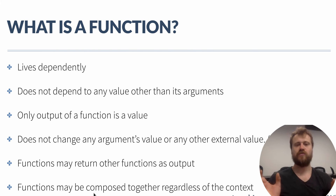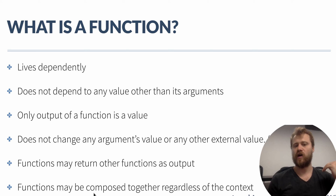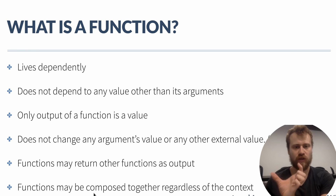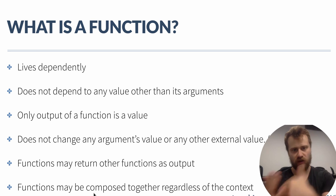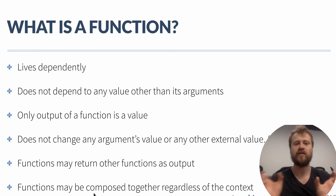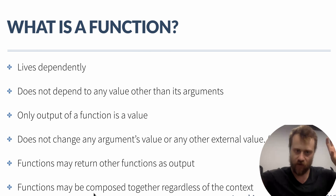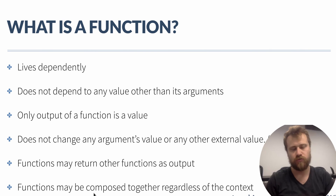Even in Java 8, in functional programming you should not cause side effects. Since we are in between functional programming and object-oriented programming, some rules may not be applied so strictly. Another important thing is that functions may return other functions as output. In object-oriented programming a method may return only one value — an object instance or a primitive — but in functional programming a function may return another function to continue processing. Functions may also be composed together regardless of context.